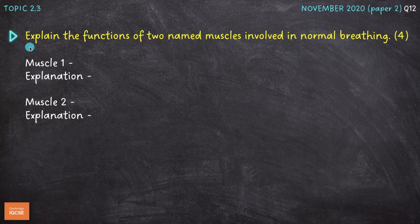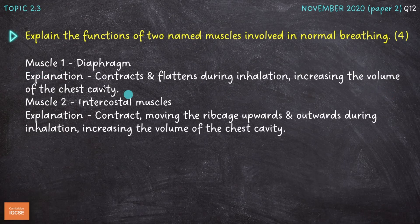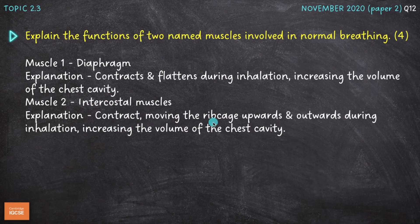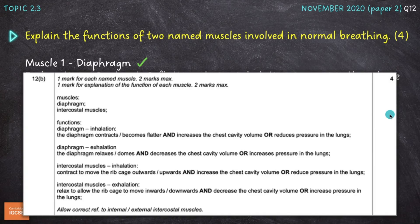Question number two: explain the functions of two named muscles involved in normal breathing for four marks. This is on the mechanics of breathing. The two muscles involved are the diaphragm and the intercostal muscles. The diaphragm contracts and flattens during inhalation, increasing the volume of the chest cavity. The intercostal muscles contract, moving the ribcage upwards and outwards during inhalation, also increasing the volume of the chest cavity. Let's have a look at the mark scheme, as I've only talked about inspiration here.